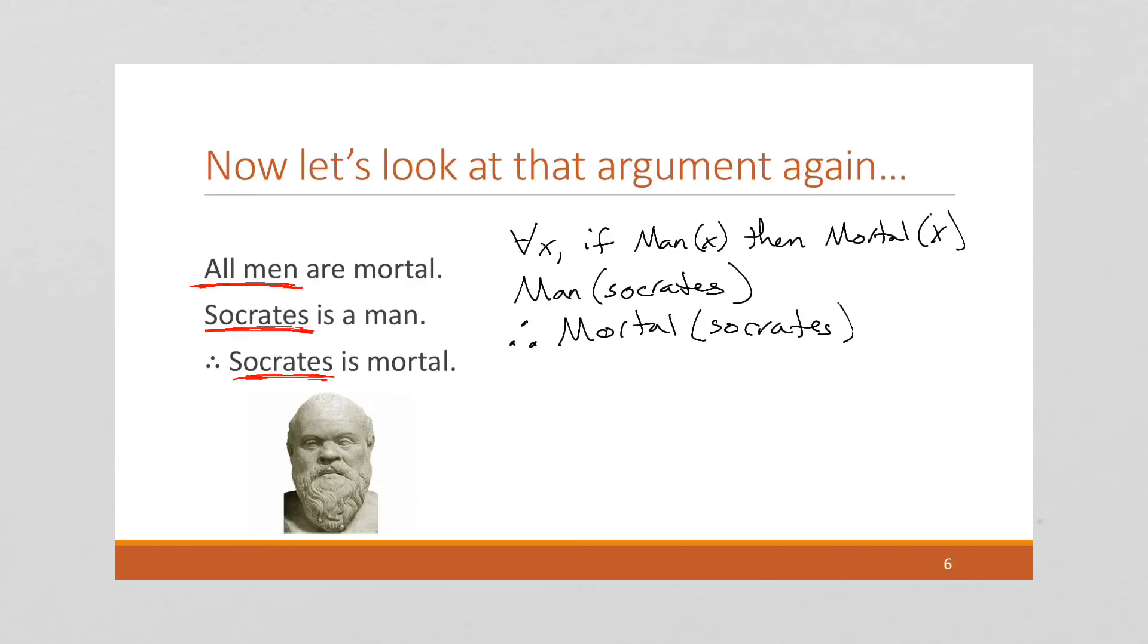So, what is the argument form for this argument? Well, I gave you a lot of it right there. But the actual argument form is going to be simplified further. So the argument form is going to be for all x, P of x implies Q of x. P of x is given. So therefore, we conclude that Q of x is true. So is this a valid argument form? Yes. This is universal modus ponens.